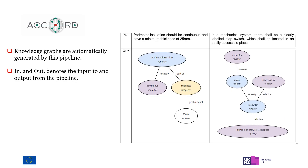Here is an example of how we automatically turn a regulatory sentence in a building document into a knowledge graph. Knowledge graphs are automatically generated by this pipeline. The input is a regulatory sentence — for example, 'perimeter should be continuous and have a minimum thickness of 25 millimeters' — and the output is a knowledge graph that identifies the objects, and the relationships between the properties of the object.